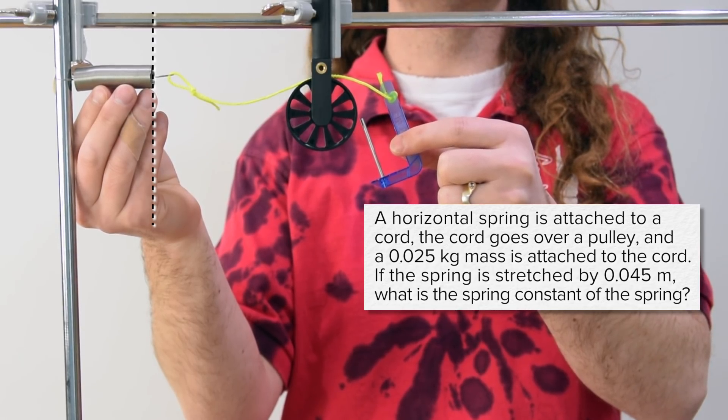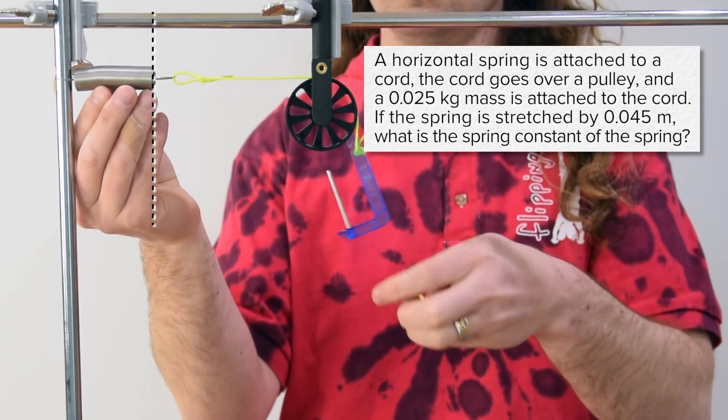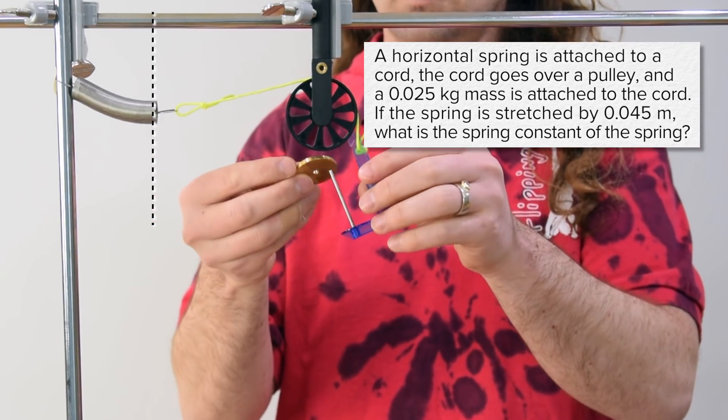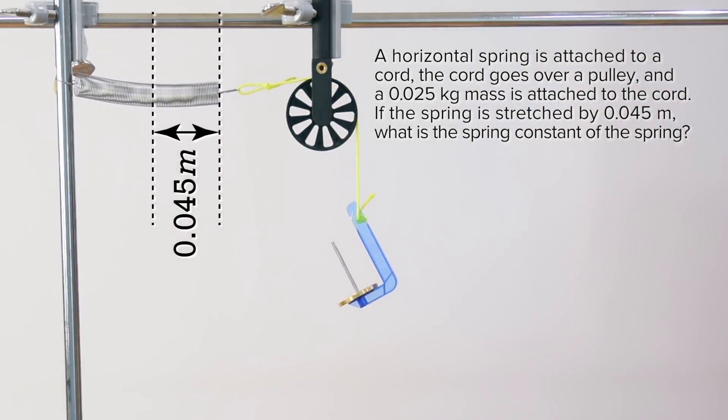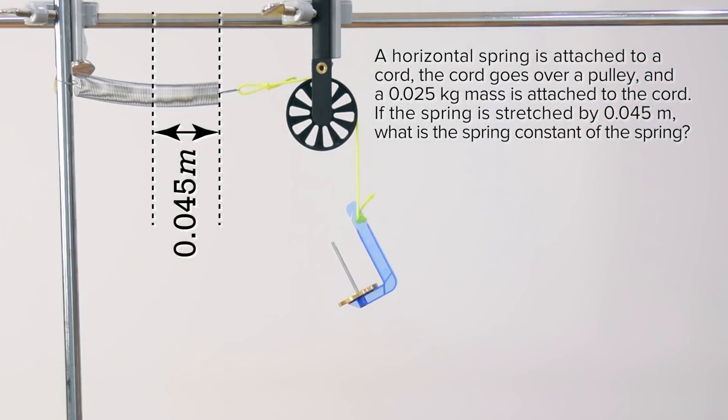Flippin' physics. A horizontal spring is attached to a cord. The cord goes over a pulley and a 0.025 kilogram mass is attached to the cord. If the spring is stretched by 0.045 meters, what is the spring constant of the spring?